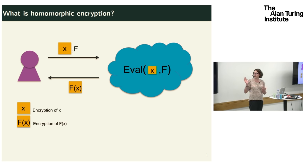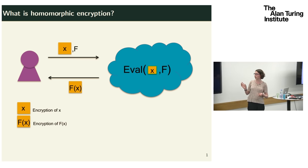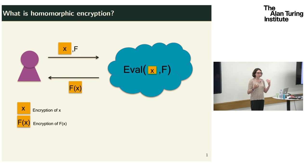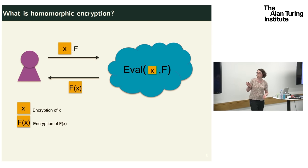It's typically explained in this client-server model. We've got a purple client and a blue cloud server, and the client is the owner of some data x and they'd like to compute a function f on the data x. In this slide and throughout the talk, any time you see a yellow box, it is an encryption of the item within the box.